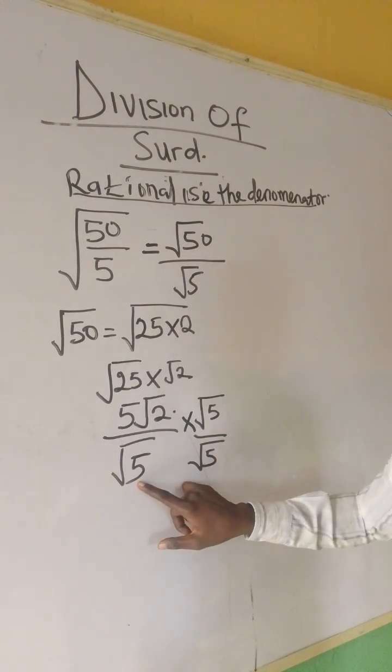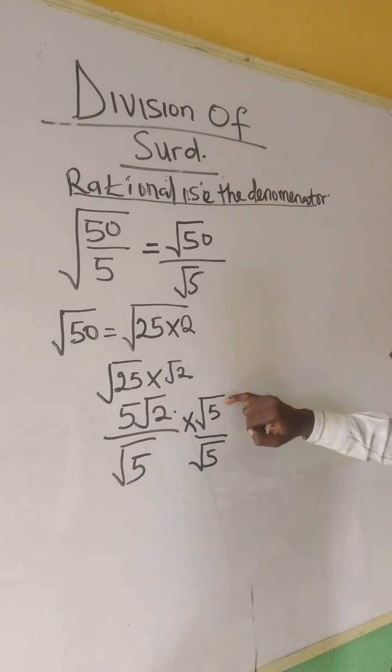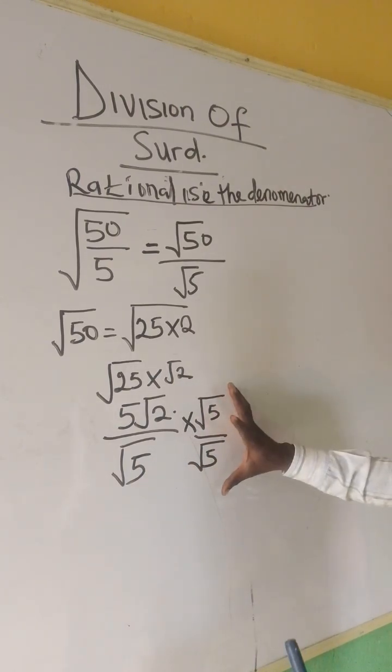Now, if here was root 3, this would be root 3 and root 3. If here was root 7, this would be root 7 and root 7. And because what we have here is root 5, we have to stay put.